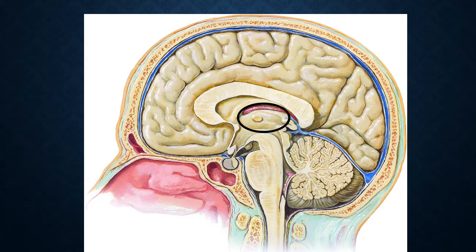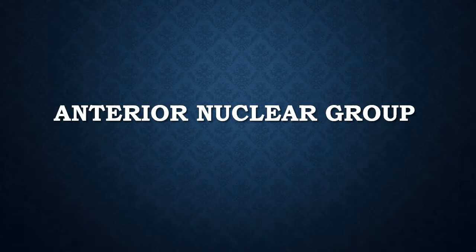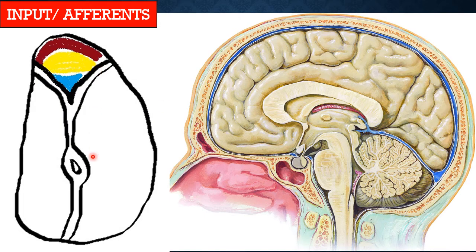We are going to examine different nuclei. First, we are going to see the intramedullary laminae. In this picture we can identify a Y-shaped band which is called the intramedullary laminae. Anterior to the divergence of the intramedullary laminae, we can identify a nucleus called the anterior nucleus, which divides into three parts: anterior ventral, anterior dorsal, and anterior medial.